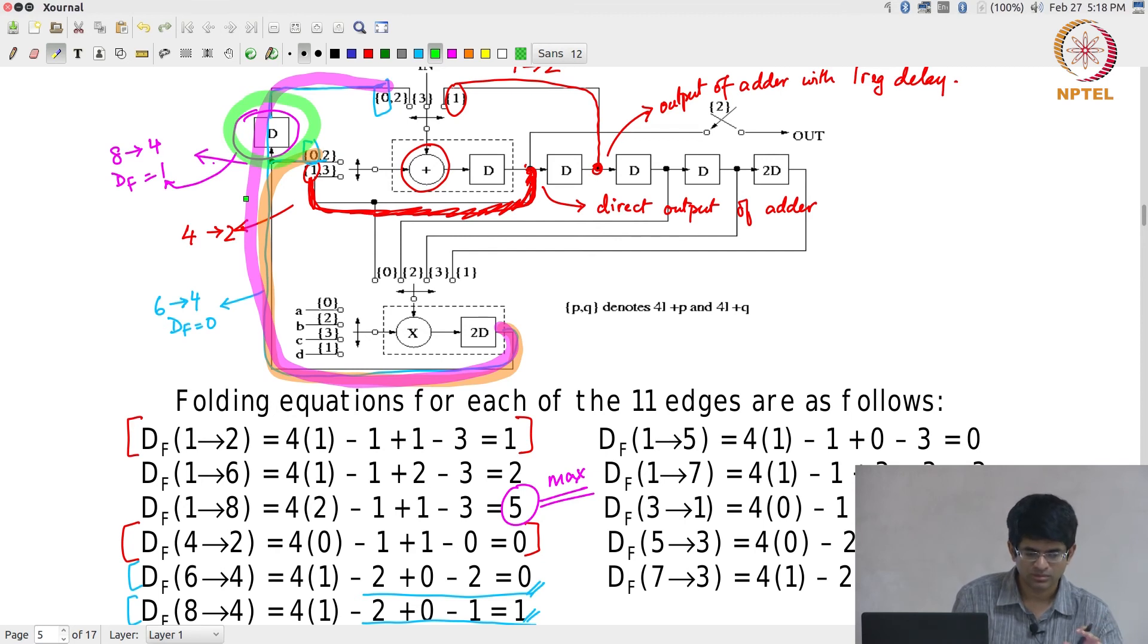To summarize, once I am able to come up with a set of folding orders, the folding schedule, the process of converting that into a hardware architecture is something that is reasonably automatable. When I say automatable, I can write a program to automatically create this structure once I give you the folding orders because what does that involve? It basically involves computing all the DF values and then making all the connections.